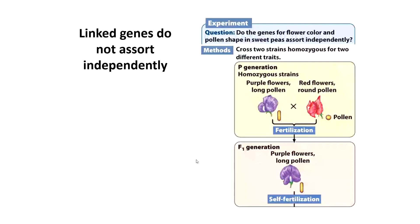Linked genes cannot assort independently during meiosis. They travel together because they are physically attached to the same chromosome. Mendel observed this type of thing with his pea plants, but he couldn't really explain it. Some of his math was off when he was testing for whether or not two phenotypes should end up in the same organism. He saw that this was happening for some traits but not all, couldn't explain it, and so didn't pursue it. It wasn't until later investigators had a concept of the gene, the chromosome, and an understanding of meiosis that we were able to figure this out.